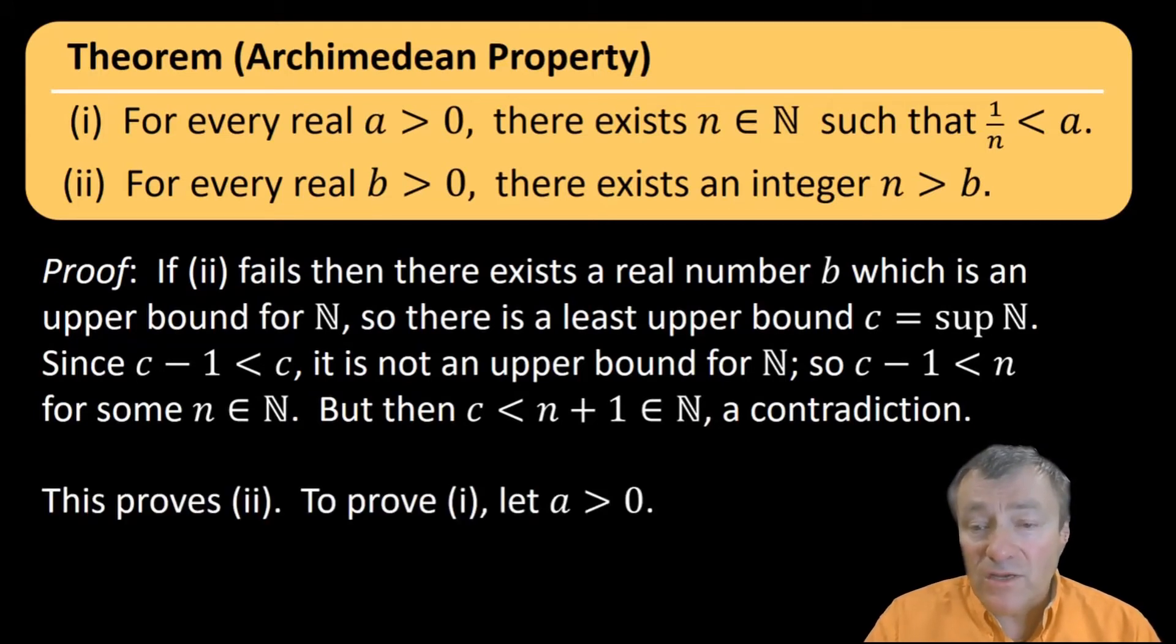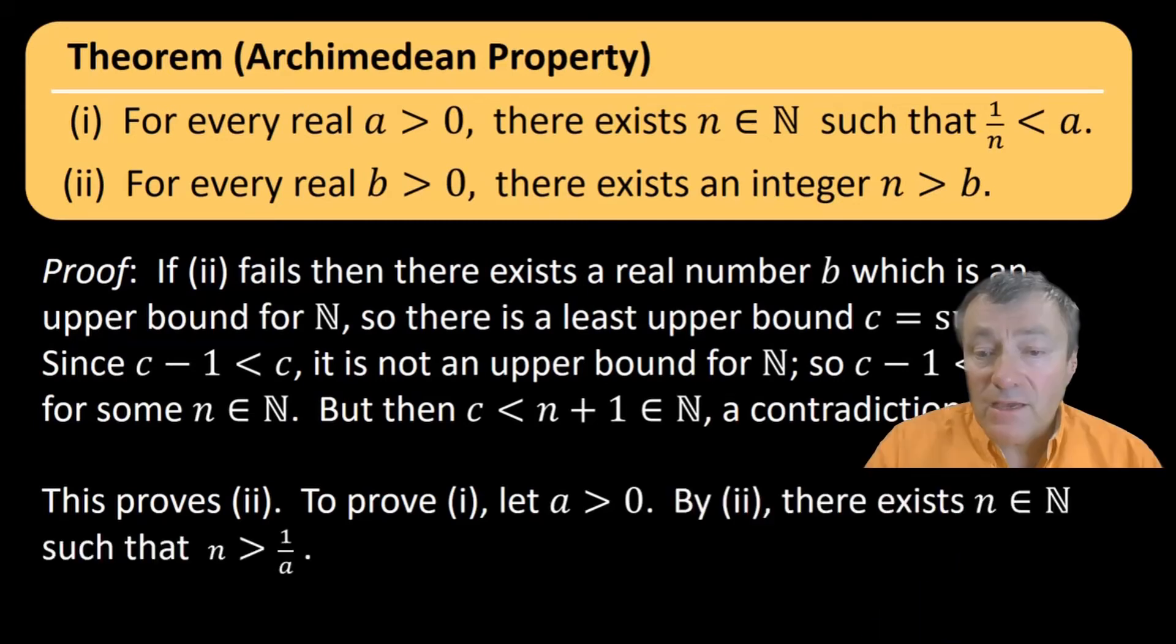I said part one is equivalent, but just for the sake of having another practice in writing proofs, let's write out the proof of part one. Now, according to the part two that we just proved, there's a natural number n bigger than one over a. Take one over n, and that would then be less than a. And that completes the proof.